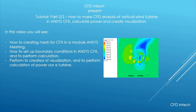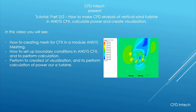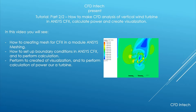Welcome to part 2 of the tutorial on how to calculate a vertical wind turbine. In this video you will see: first, how to create a mesh for CFX in the ANSYS Meshing module; second, how to set up boundary conditions in ANSYS CFX and perform the calculation; and third, we will create visualizations and perform the calculation of power of the turbine.